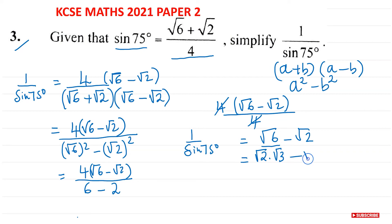So this is root 6 minus root 2. Now we can see root 2 is a common factor, so we can take root 2 outside and open some brackets. So we've got root 3 and then minus 1 here. So this will now be the fully simplified version of 1 over sine 75 degrees.